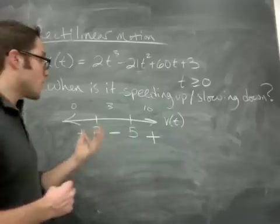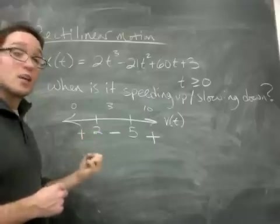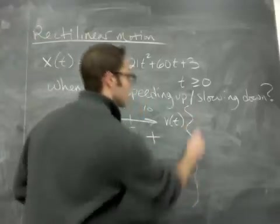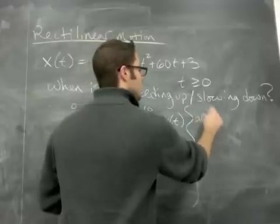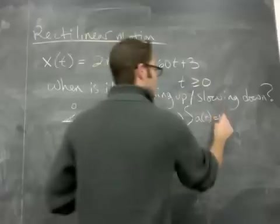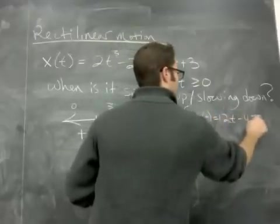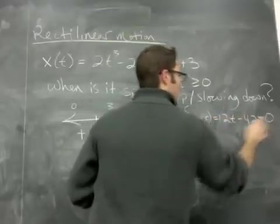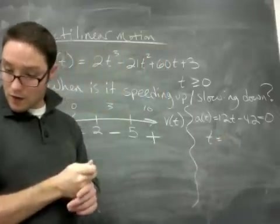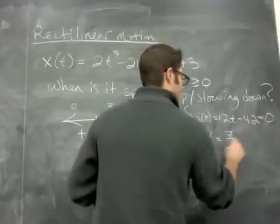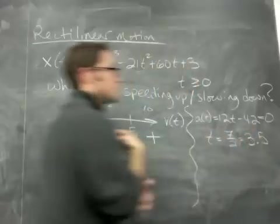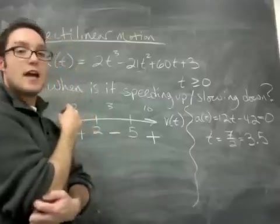So what I need to do that I haven't done yet is set the acceleration equal to 0 and find out what its number line is. So I'll do that over here. Acceleration was an easy one to set equal to 0. It's 12t - 42. Set that equal to 0, and you get t equals 42 divided by 12. What is that, 3.5? 7 halves when you reduce. So 3.5.